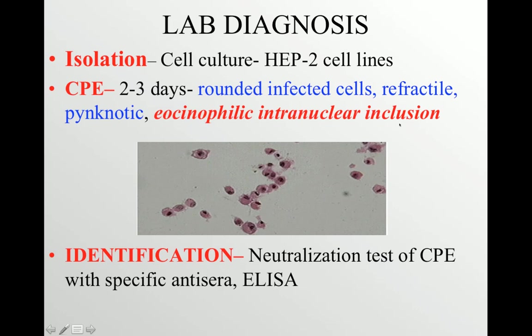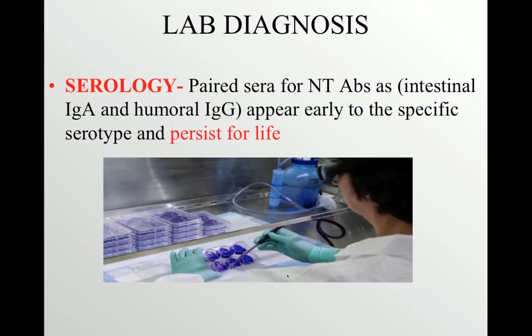Eosinophilic intranuclear inclusions are specific for poliovirus — this is going to be one of your examination MCQs. Within the cell cultures, we can identify them by performing neutralization tests using specific antisera, or we can also use ELISA tests.